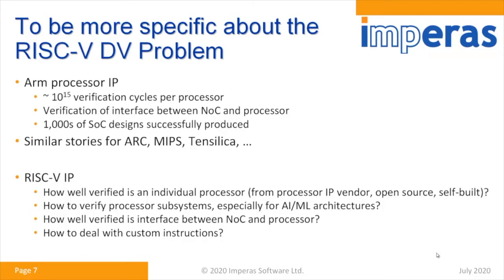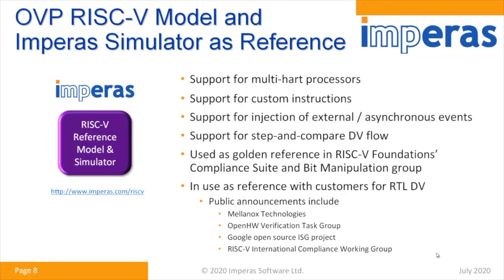Verification is a big challenge. ARM verifies a processor with 10 to the 15 cycles, which is a huge number. The challenge as a RISC-V developer is, whether you're buying a core, producing it yourself, or using an open source one, you have to verify the processor, verify the subsystems, verify the interface into the network-on-chip, and handle custom instructions. At Imperas we are experts in verification, and our model allows you to do not just a single core — we can do multi-hart processors, custom instructions, asynchronous events, and debug modes. We have the technology for what we call a step-and-compare DV flow.